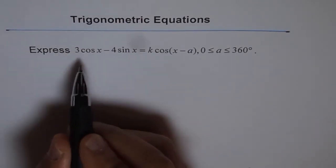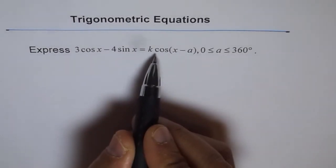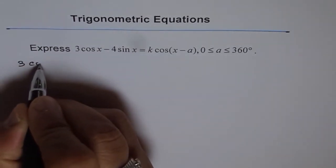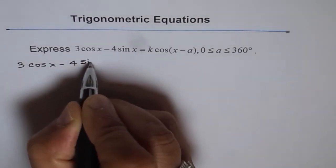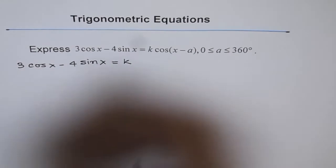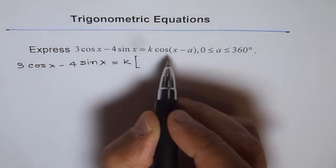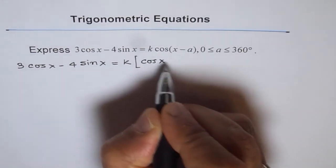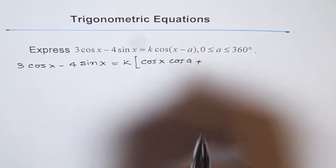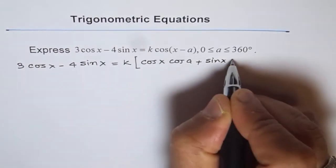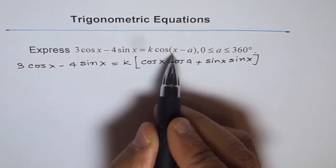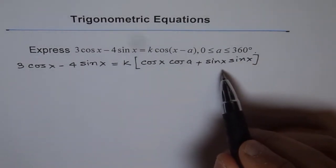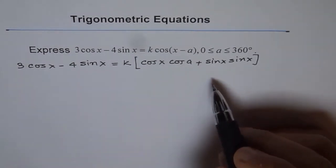The way to do it is like this: write the left side as such and expand the right-hand side using the cos(a minus b) formula. So we can rewrite this as 3 cos x minus 4 sin x equals k times cos x cos a plus sin x sin a. That is the expansion of cos(x minus a), compound angle formula. If you have difficulty understanding this, you can look into my videos on compound angle formulas. It is a straight application of the compound angle formula.